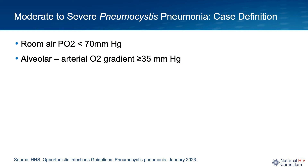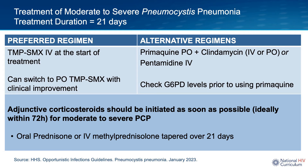The treatment of moderate to severe PCP differs from mild disease. Moderate to severe PCP is defined by the OI Guidelines based on the level of hypoxia: a room air PO2 less than 70 mmHg, or an alveolar-arterial O2 gradient greater than or equal to 35 mmHg. The treatment duration is also 21 days, and the preferred regimen is again trimethoprim-sulfamethoxazole. However, for moderate to severe disease, the OI Guidelines recommend initiating intravenous treatment first, then switching to oral trim sulfa as the patient clinically improves.